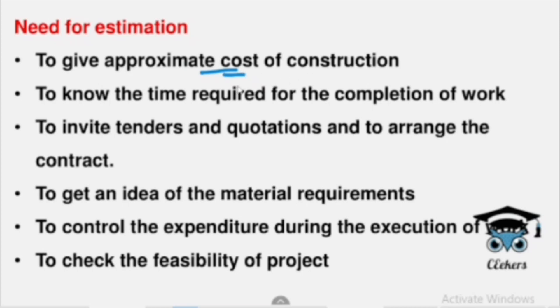By the time we work through the process, we reach the effective cost. We need to determine the amount of time and the permitted cost. So we can review those conditions. If you are interested in the types of tenders and quotations, you can use tenders and quotations. You can determine the materials required. That is to control the expenditure during the execution of work.